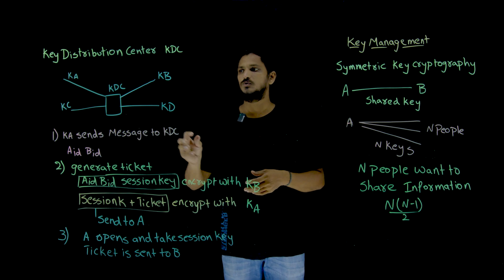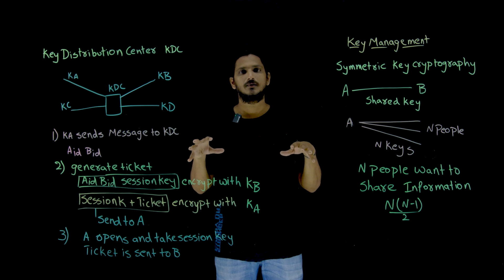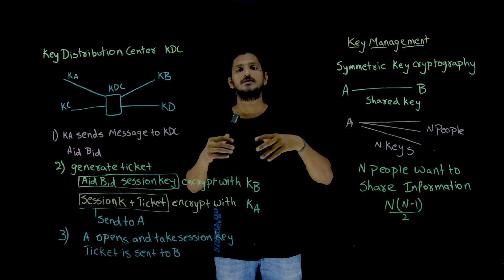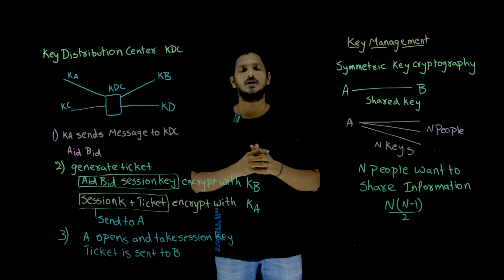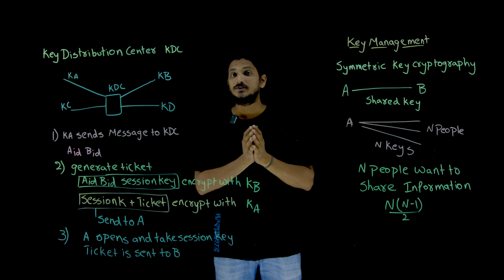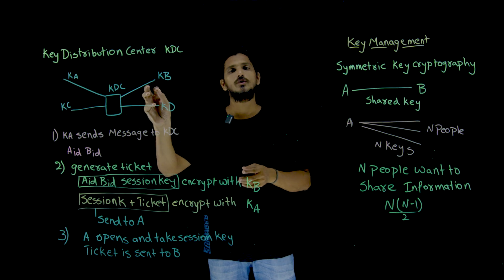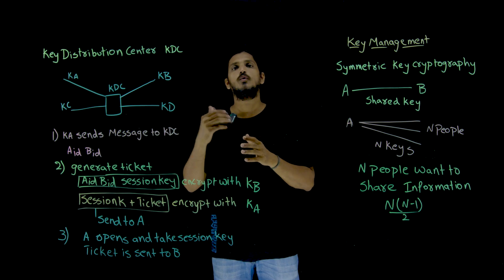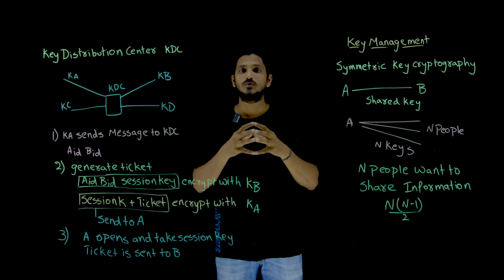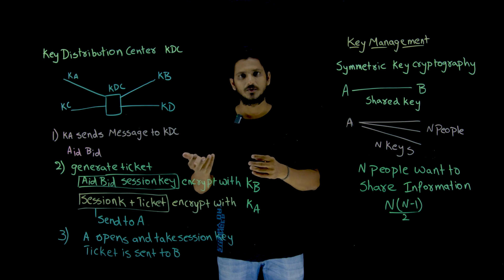But think about this — millions of people want to share information. How is KDC going to manage all of this? We would need multiple Key Distribution Centers, which becomes more complex. That is why we need a new technique where the key can be exchanged between A and B without any third party over the internet knowing. There are techniques for how a key can be shared between A and B over the internet without the third person knowing, and we will discuss those in our next class.